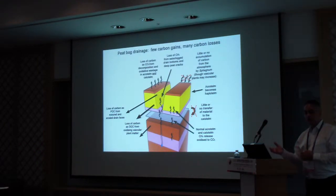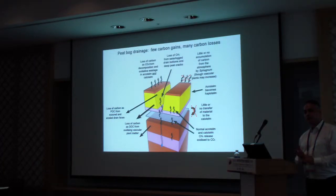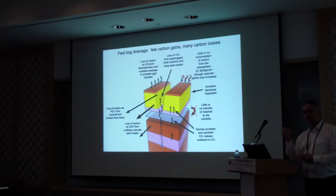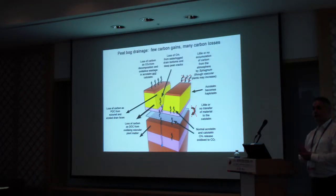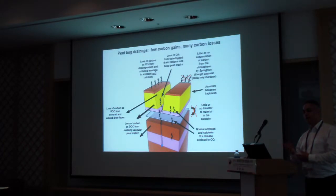It also comes out as particulates, as dissolved organic carbon — it goes into the water systems, and that causes problems for drinking water. If you have dissolved organic carbon, it creates a brown water colour that companies then have to spend millions of pounds removing from the drinking water to meet drinking water standards.